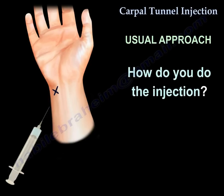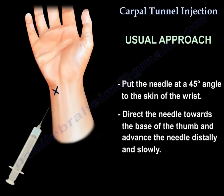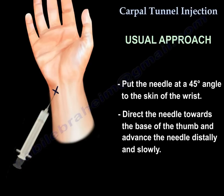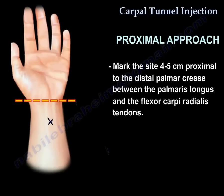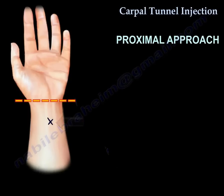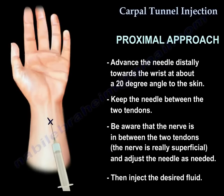To do the injection, put the needle at a 45-degree angle to the skin of the wrist. Direct the needle towards the base of the thumb and advance the needle distally and slowly. For the proximal approach, mark the site 4-5 cm proximal to the distal palmar crease, between the palmaris longus and the flexor carpi ulnaris tendons. Advance the needle distally towards the wrist at about a 20-degree angle from the skin. Keep the needle between the two tendons — be aware that the nerve is in between the two tendons and is quite superficial. Adjust the needle as needed, then inject the desired fluid.